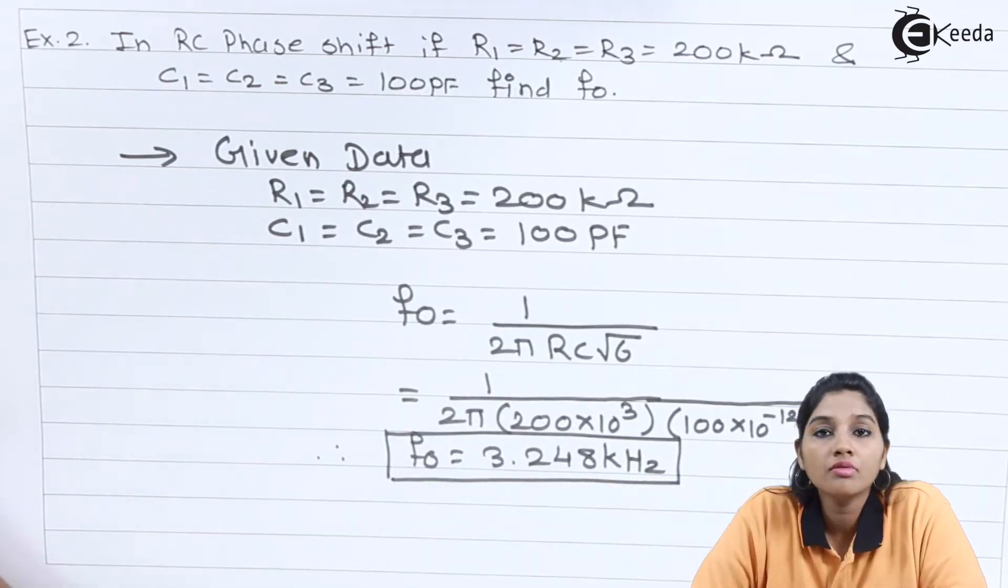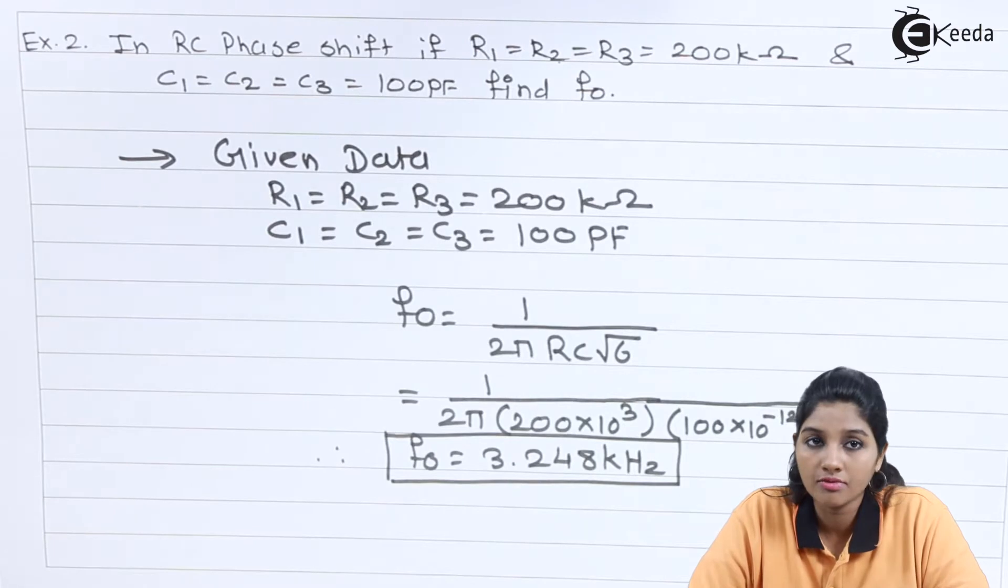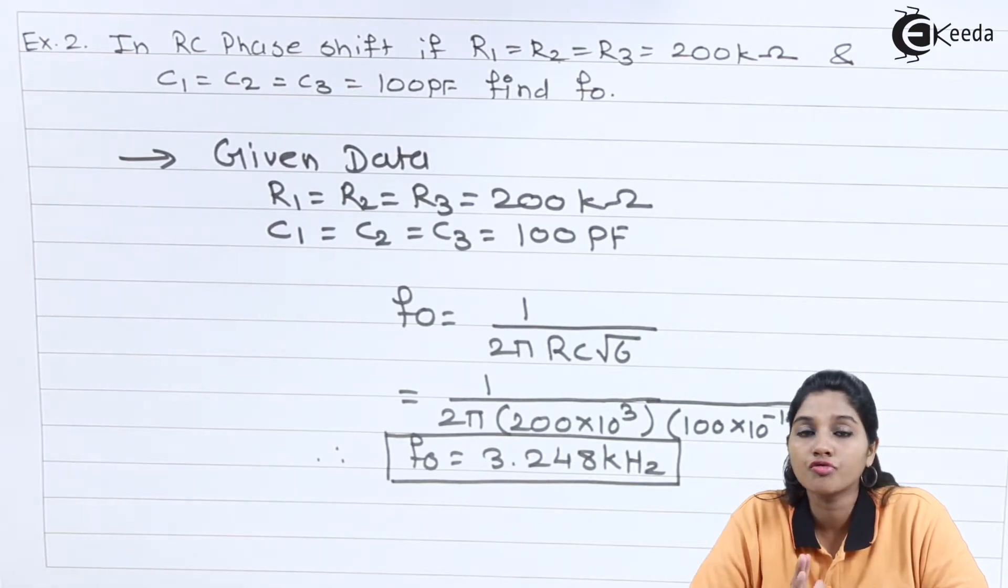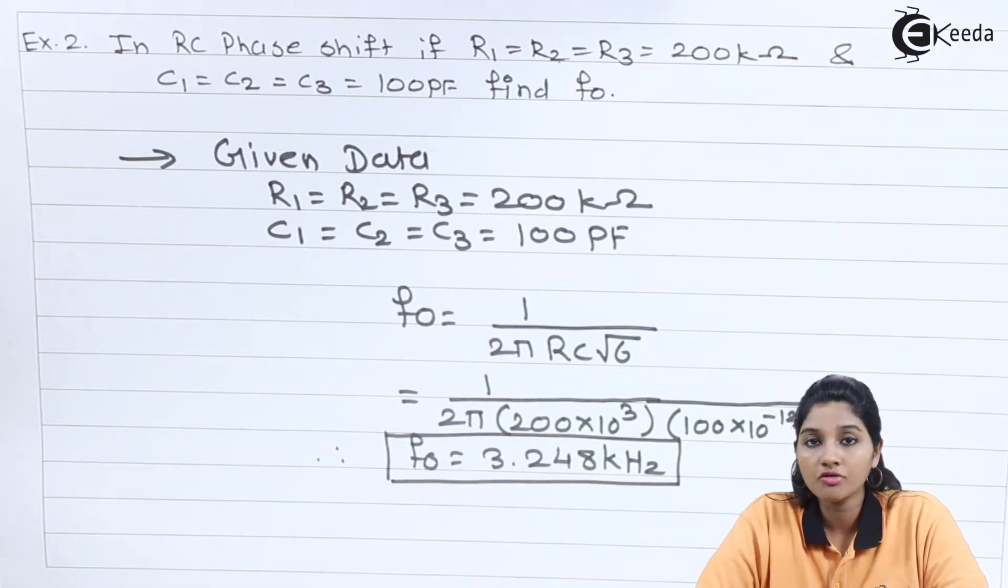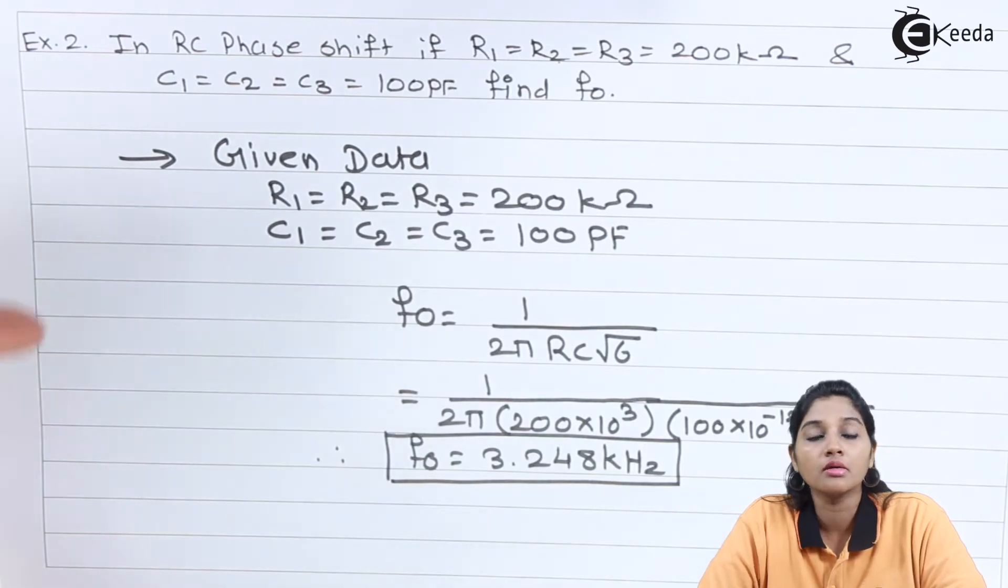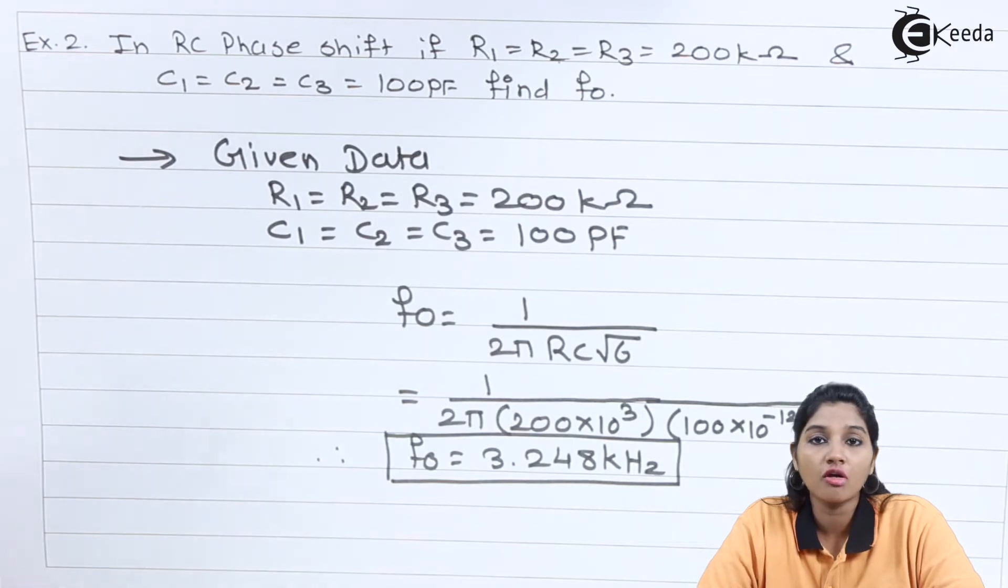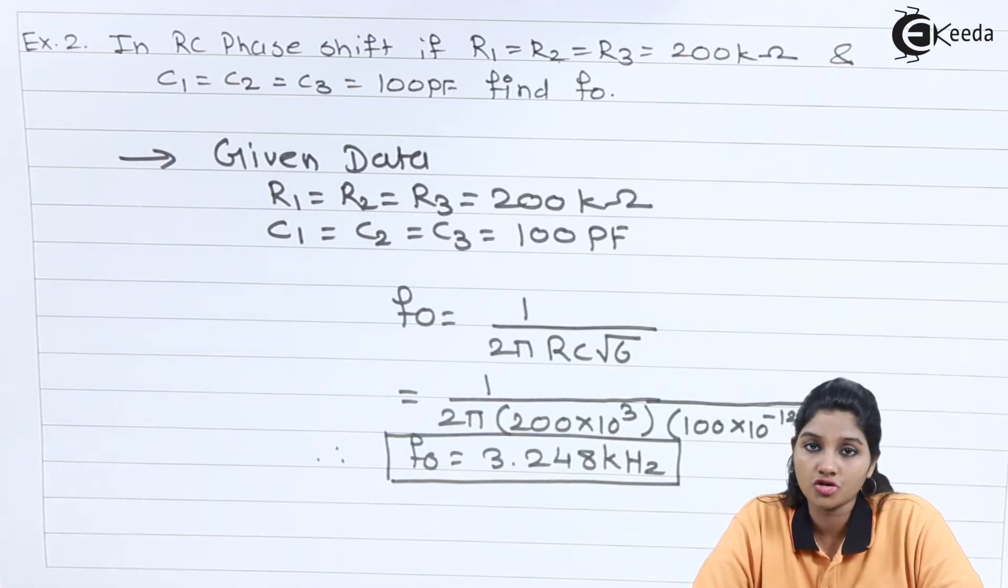So from this problem we will come to know that here in this problem three RC networks are used which provide a phase shift of 180 degree and the additional phase shift of 180 degree is provided by the transistor as an amplifier or FET as an amplifier. So the total phase shift around it becomes 360 degree. So we can use the circuit as an RC phase shift oscillator.